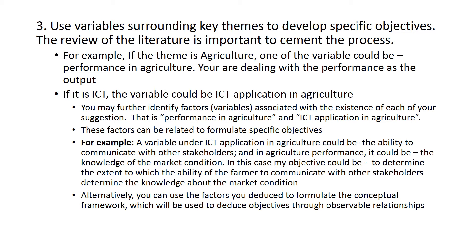Furthermore, you may further identify factors or variables associated with each of your suggestions — that is, in performance in agriculture and ICT application in agriculture — and then relate those factors to produce objectives. For example, a variable under ICT application in agriculture could be the ability to communicate with other stakeholders, and a variable in agriculture performance could be knowledge of the market. In this case, my objective could be to determine the extent to which the ability of the farmer to communicate with other stakeholders determines the knowledge about market conditions.